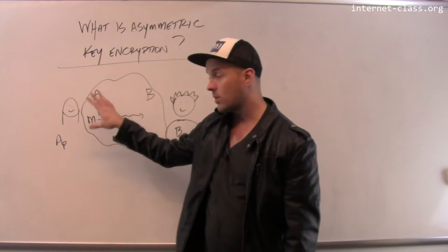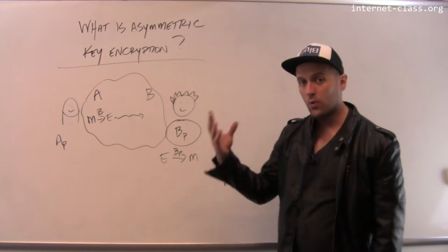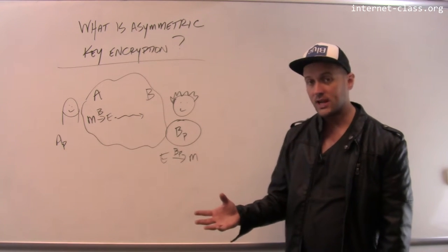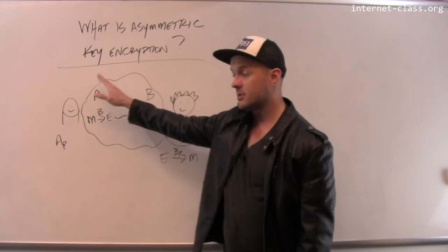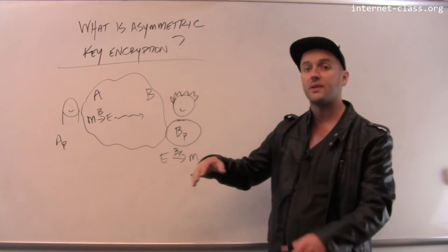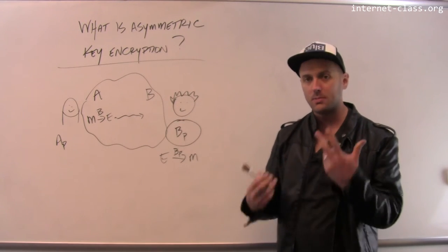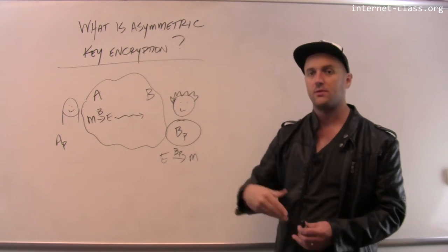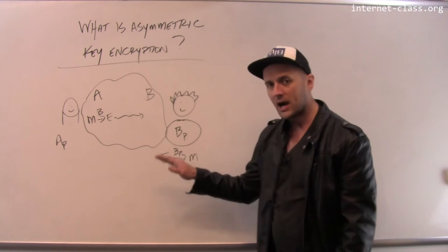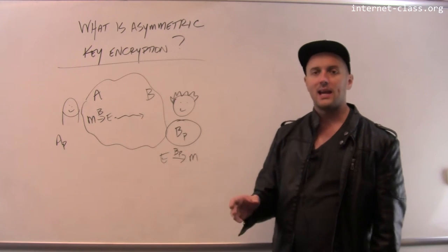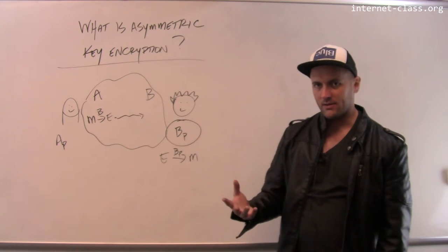In this case, because there's one key used for encryption and one key used for decryption, I can publish to the world the key that you need to use to encrypt messages before sending them to me, and keep private the key that allows me to decrypt those messages.